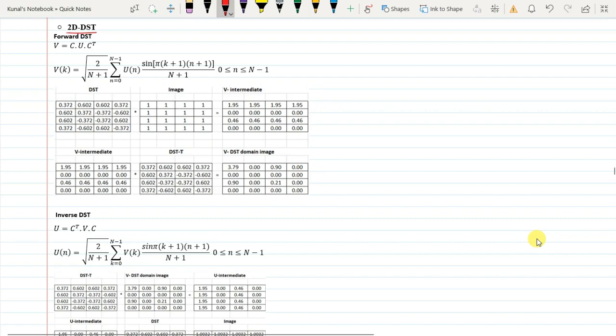Next we have 2D DST. DST is discrete sine transform, whereas DCT was discrete cosine transform. Again, the forward DST is V equals C into original image into C transpose, which is the transpose matrix of the DST.